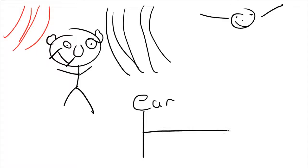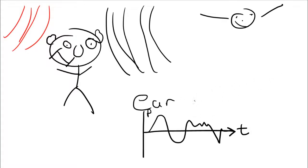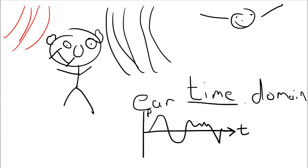The ear picks up not absolute pressure but what's called dynamic pressure — only changes in pressure. If we make a graph with time on one axis and acoustic pressure p on the other, Bob is always being hit by these changes in pressure. We could stick a microphone in there and measure pressure as well, getting the same reading — it shows some variable, in this case pressure p, over time t. We call this a time domain sensor.